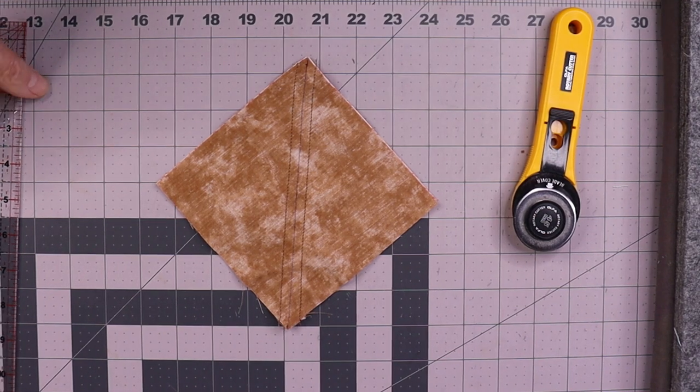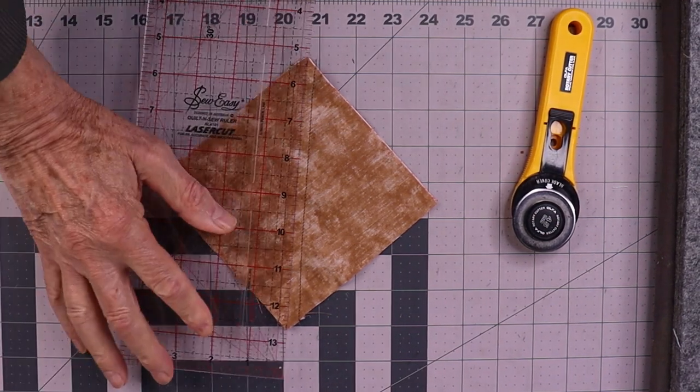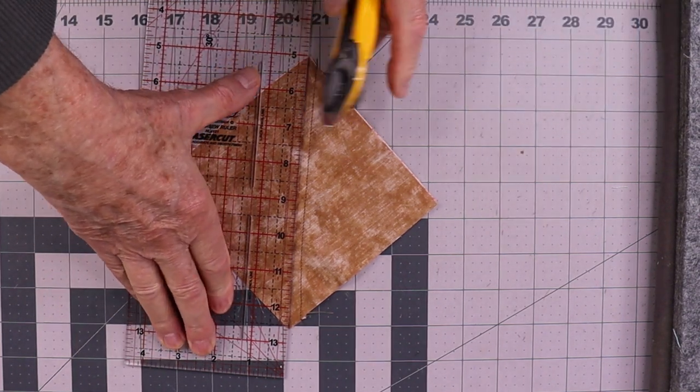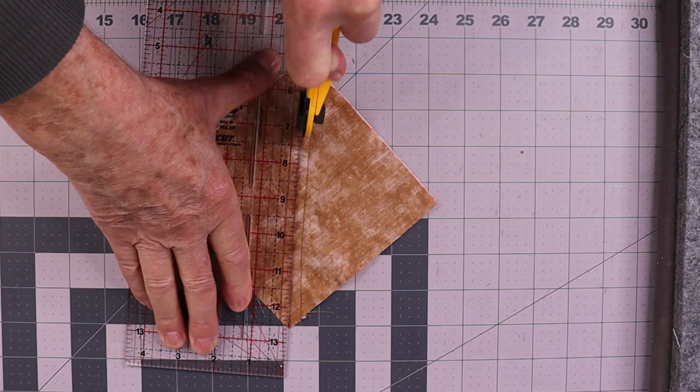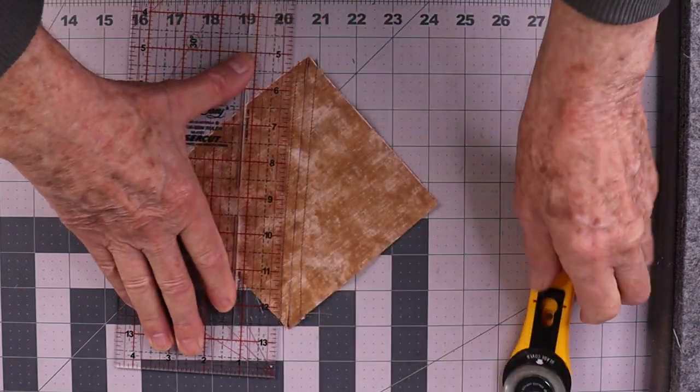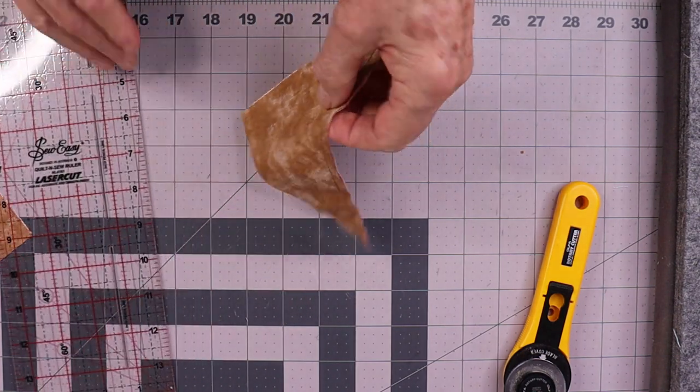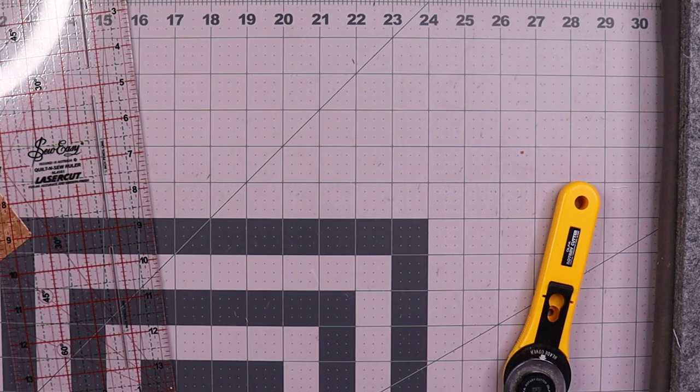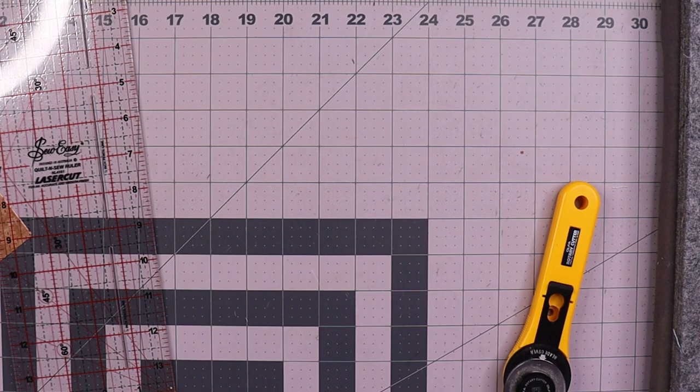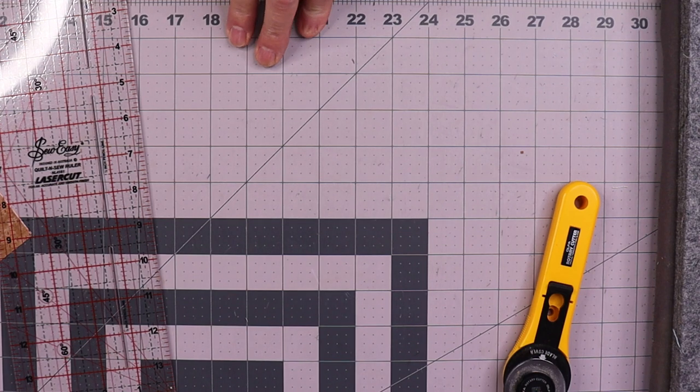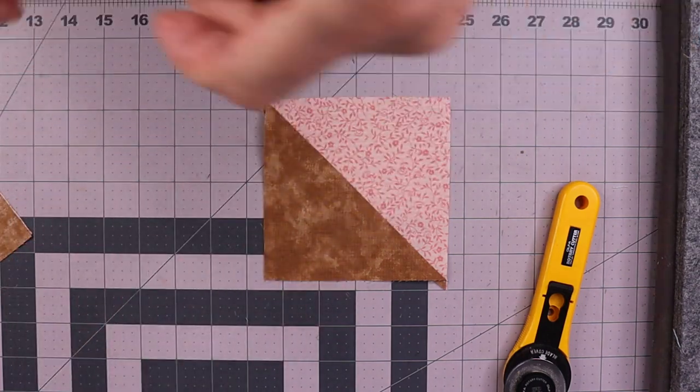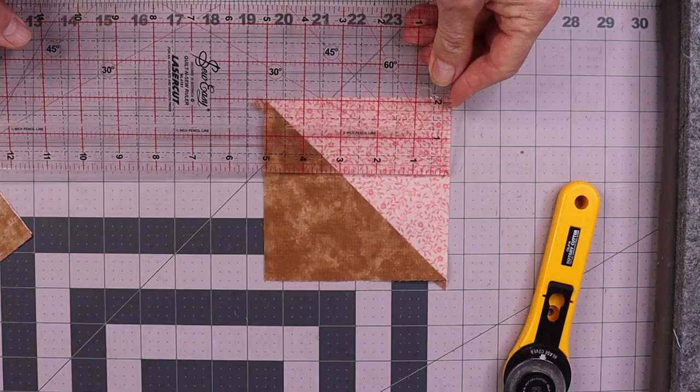Done! Now we'll cut it and press it. Press it to the tan, which I suppose is the darkest. Right, that's done. That should now be five, I think. Yep.